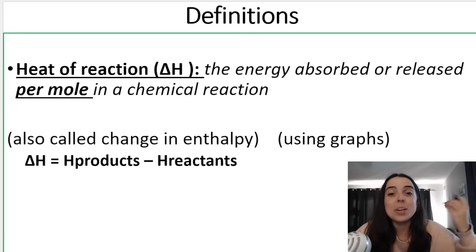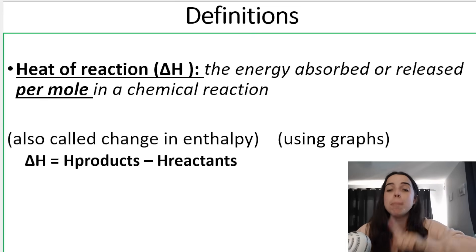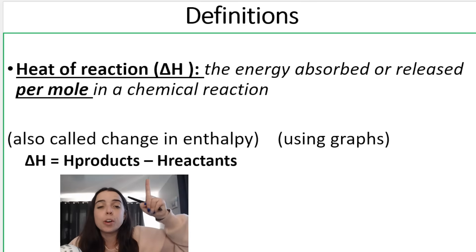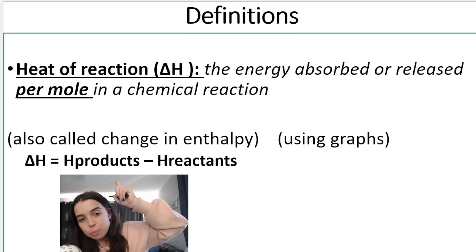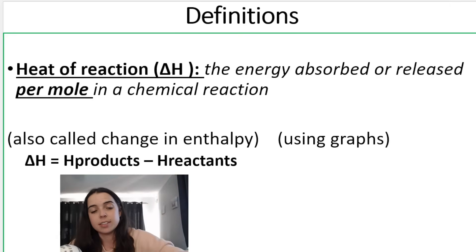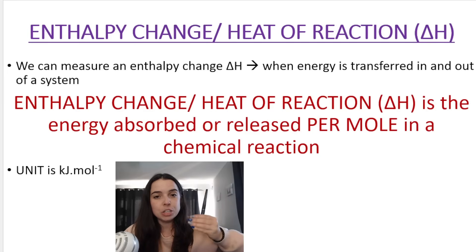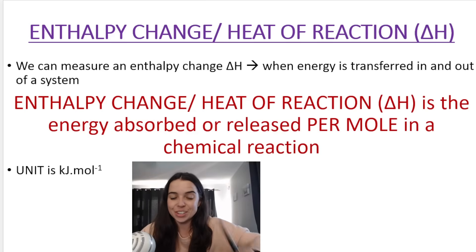The definition for heat of reaction: it is the energy absorbed or released per mole in a chemical reaction — you have to say per mole. This is the formula we use to work out change in enthalpy or heat of reaction: it's the enthalpy of the products minus the energy of the reactants. Take note of the unit — kilojoules per mole — because we need to measure enthalpy change as the energy absorbed or released per mole.